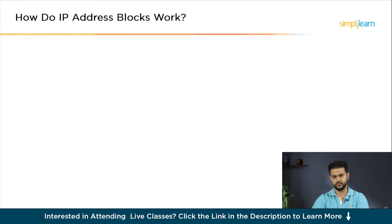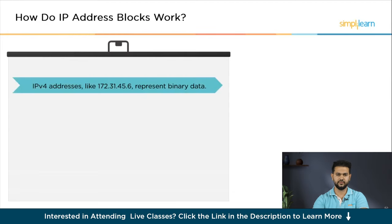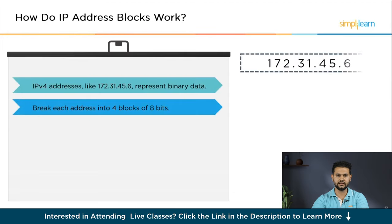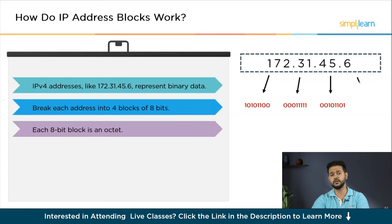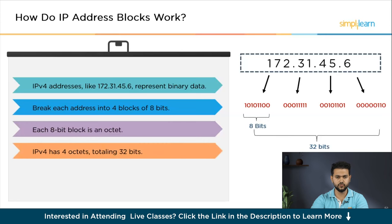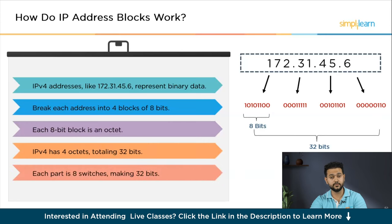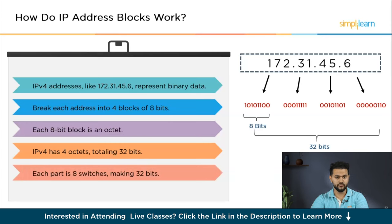So how do IP addresses work? An IPv4 address such as 172.31.45.6 may seem like regular numbers, but they are actually just a way of representing binary information. Imagine breaking down each address into four parts or blocks, and each of these blocks is made up of eight bits — tiny switches that can either be on or off, one or zero. Since there are eight bits in each block, we call them octets.